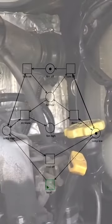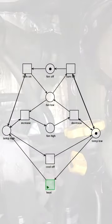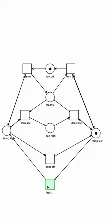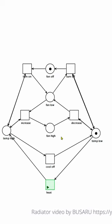Let's build a radiator fan control with a Petri-Net. This fan has three states: off, low, and high.